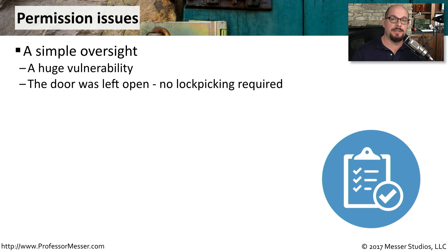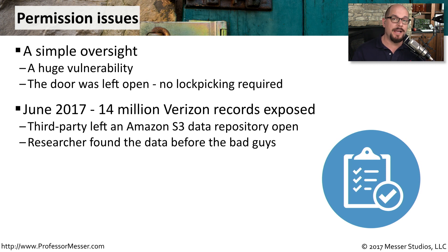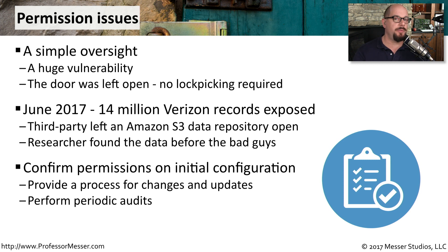Another common security issue is a simple permission problem — where a certain set of files are put onto a server but they are not protected properly by the server software. For example, in June 2017, Verizon put 14 million records out on an Amazon Cloud repository. A researcher happened to come across all of this data. Verizon was able to check the logs and see that nobody had gained access to this information, even though it was placed onto the internet with the incorrect permissions. The permissions on this data should have been checked when initially uploaded, and there should have been a process to perform periodic audits to make sure those permissions had not changed over time.